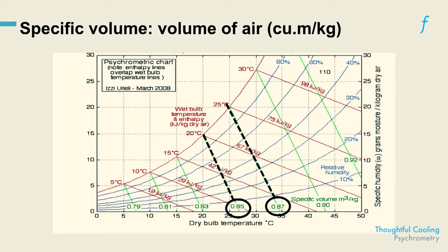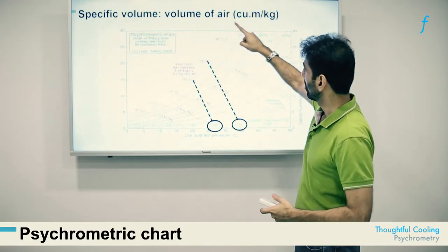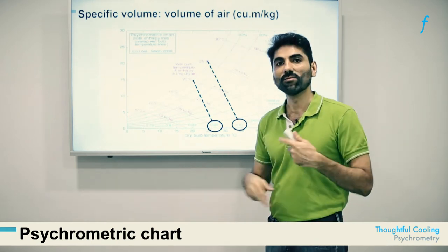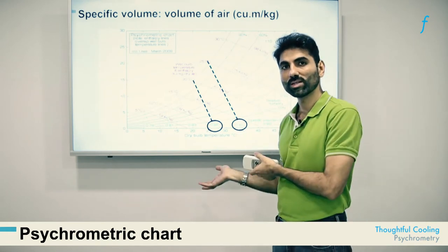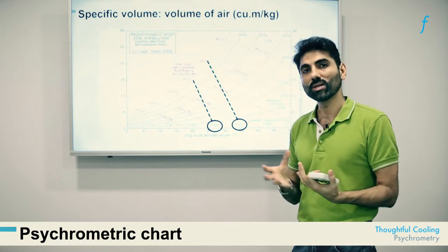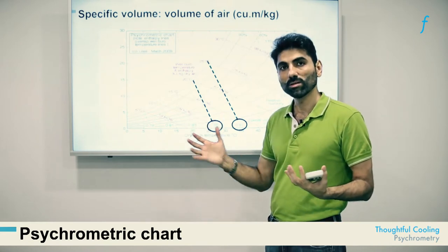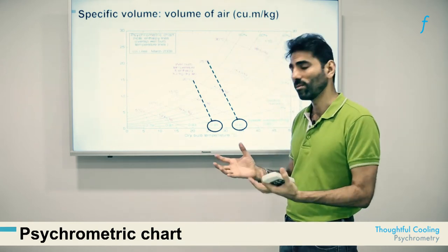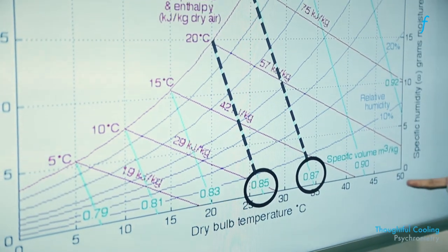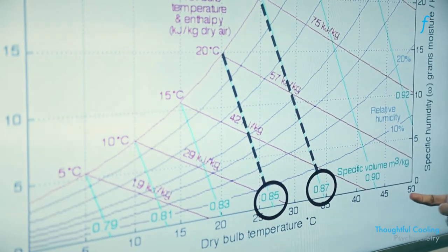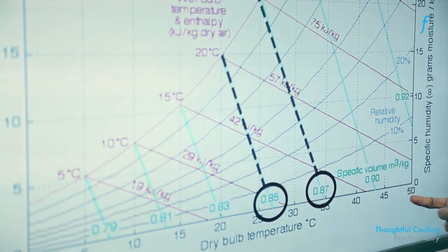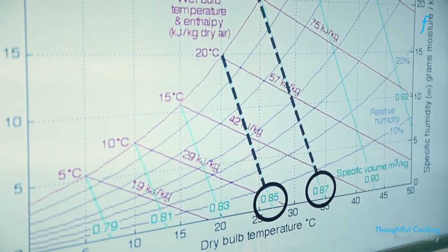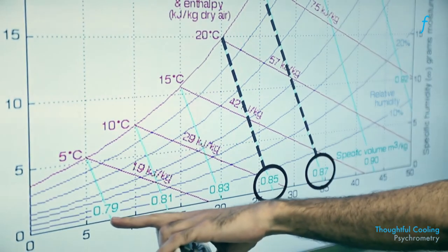The sixth layer is called specific volume, which is nothing but the inverse of density. Since density is inversely proportional to temperature — warmer things are lighter — as you go to the right the density of air reduces, which means specific volume increases. It increases from 0.79 cubic metres per kg up to 0.9 cubic metres per kg, meaning one kg of air occupies 0.9 cubic metres when warm versus only 0.79 cubic metres when cold and denser.